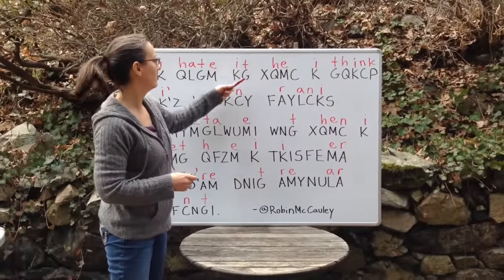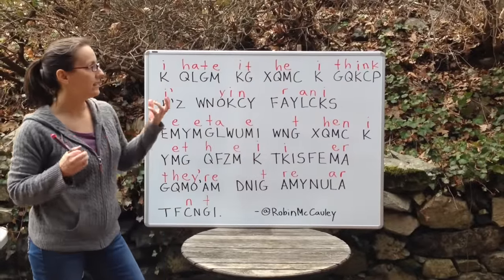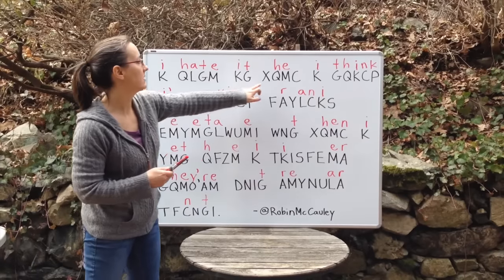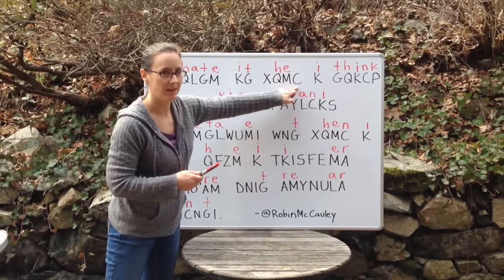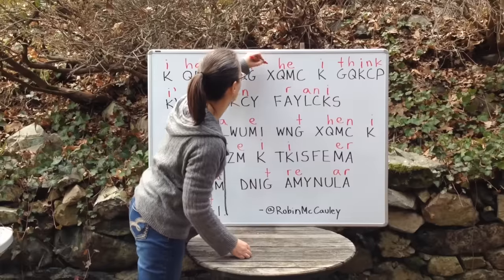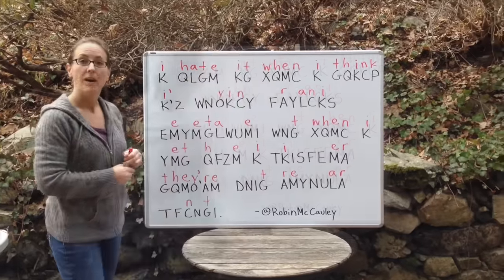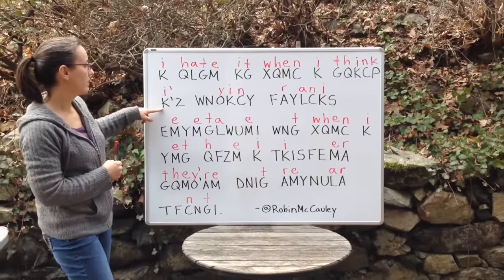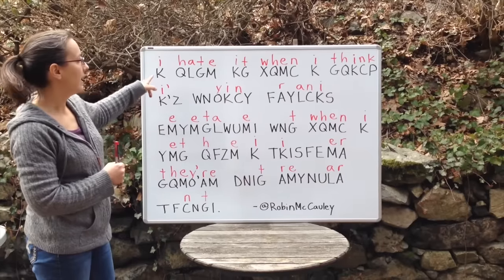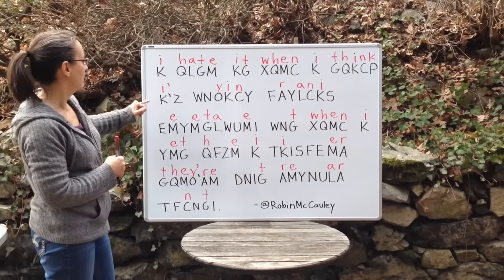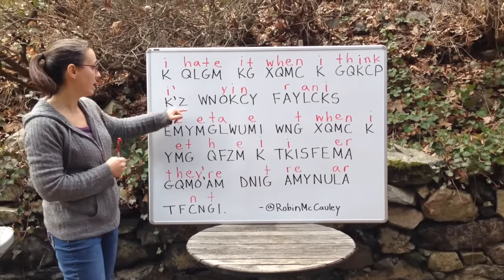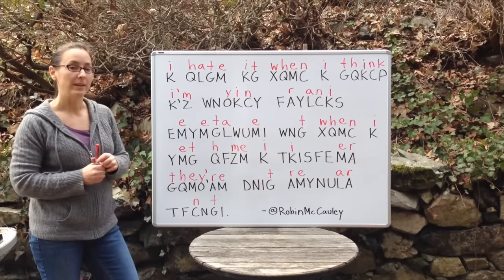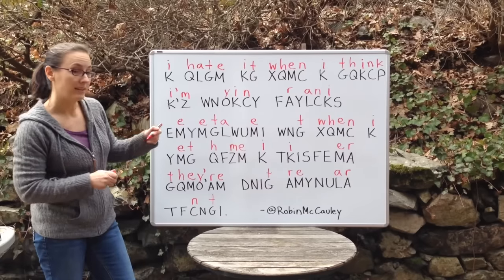Now we have: 'I hate it when I think.' So I'm thinking this is W and this is N. Now I'm ready to revisit the first contraction we started with. We're in the present tense here — 'I hate it when I think' — so I'm thinking this is 'I am.' Now let's take a look at this word. We're missing a vowel and we only have two left: O and U. So that's 'home.'